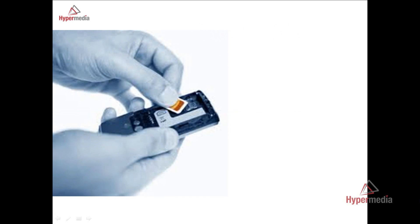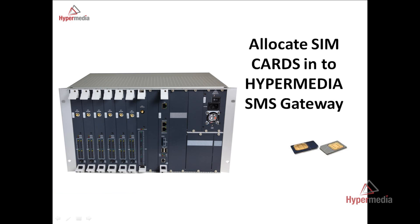The first thing you need to do is get SIM cards from local cellular operators in your country. You will buy SMS credit, recharge the SIM cards, and allocate the SIM cards inside the Gateway.